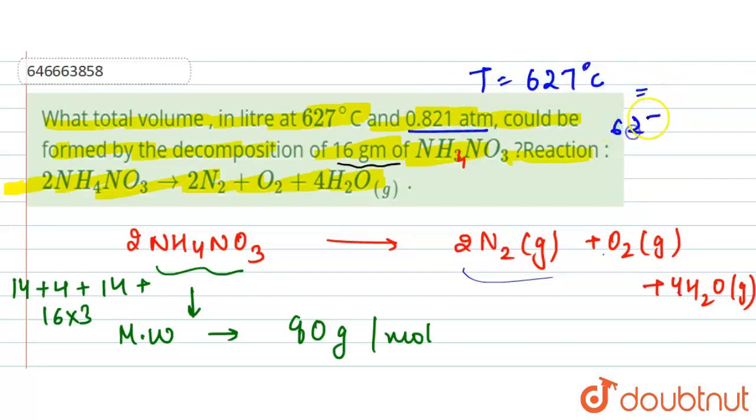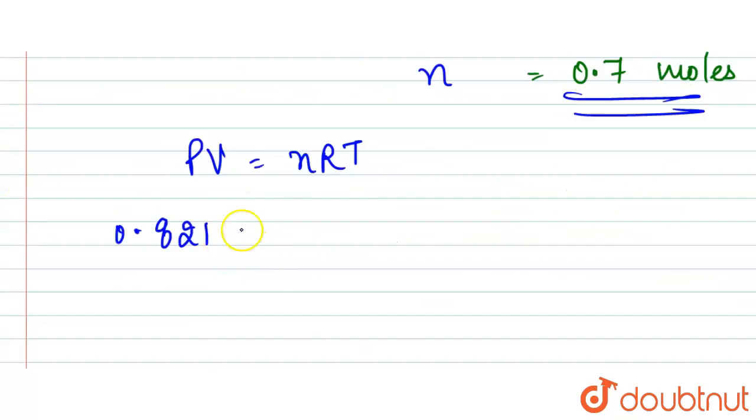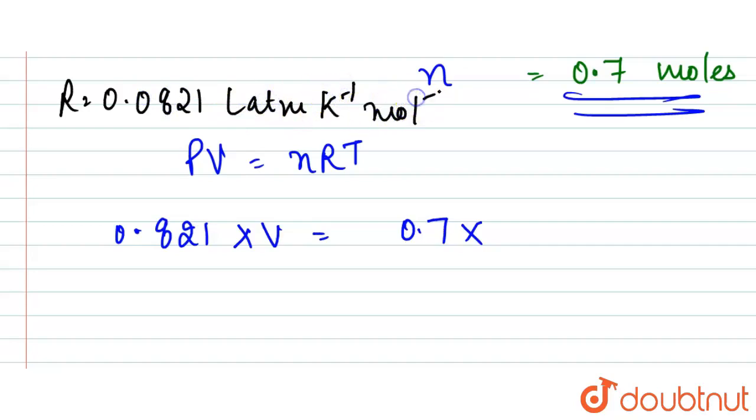So we have volume equals 0.7, and R value is 0.0821 liter atmosphere per Kelvin per mole. So we have 0.0821 into 900.